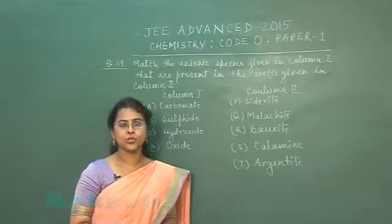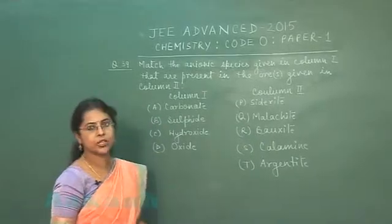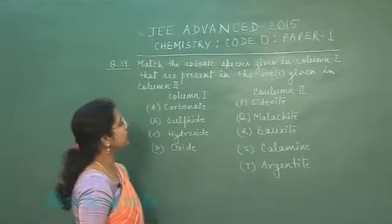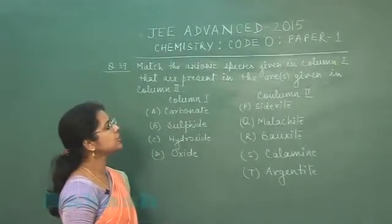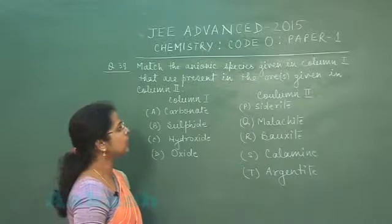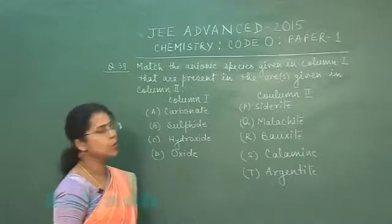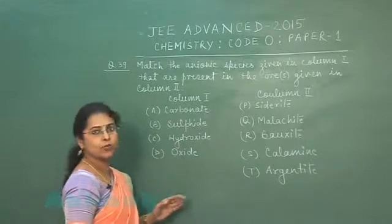Moving to the last section of this question paper, that is Section 3, Question number 39: Match the anionic species given in column 1 that are present in the ores given in column 2. Column 1 names some ores.